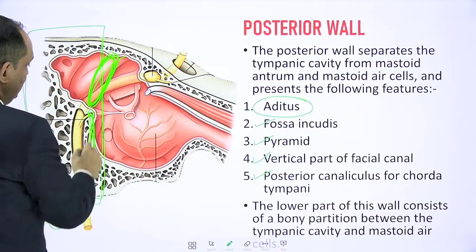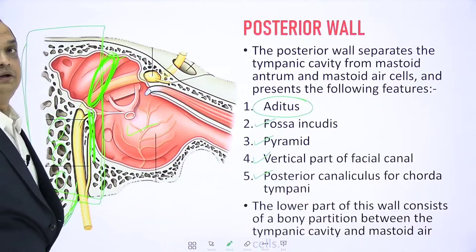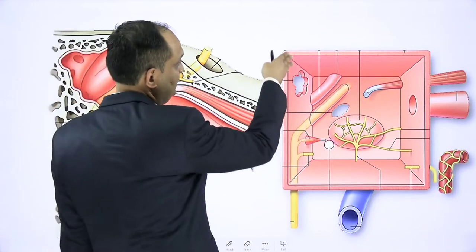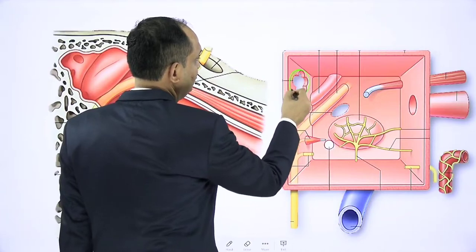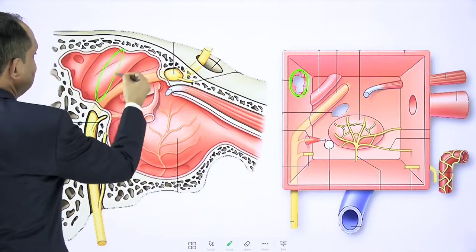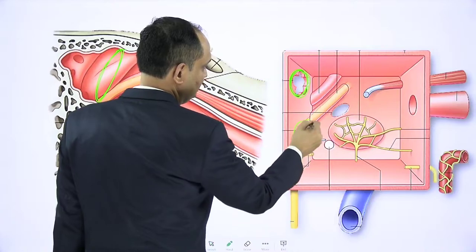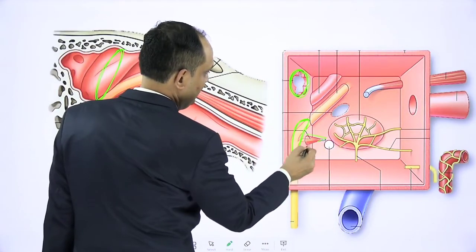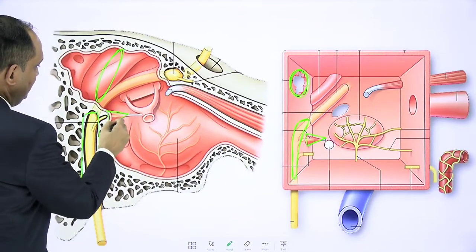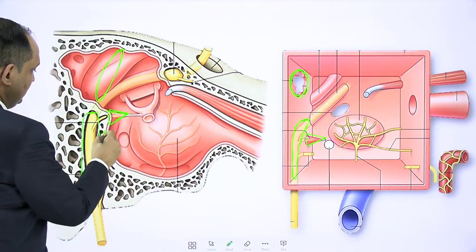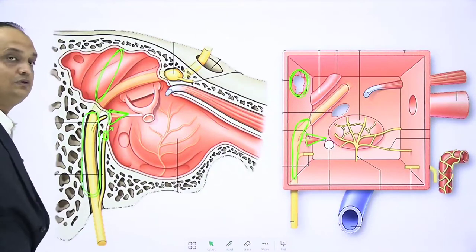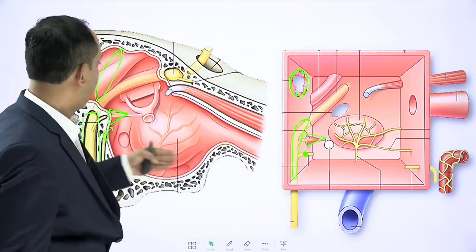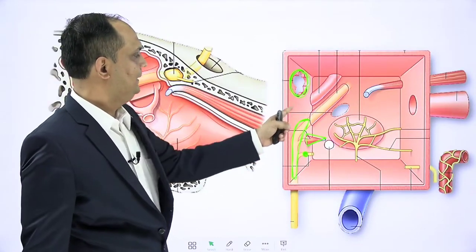In the schematic diagram, the upper part of the posterior wall has a broad opening called the aditus, and below that there is a part of the facial canal placed vertically. There is a projection called the pyramid, and the chorda tympani nerve enters through a gap known as the posterior canaliculus. So on the posterior wall, these are the important features visible in the schematic diagram.